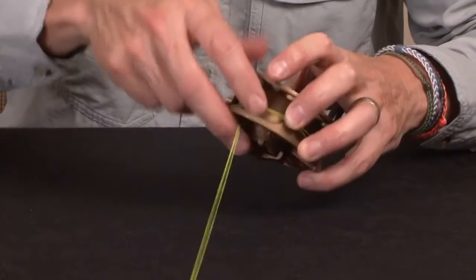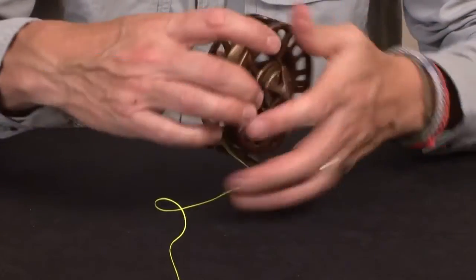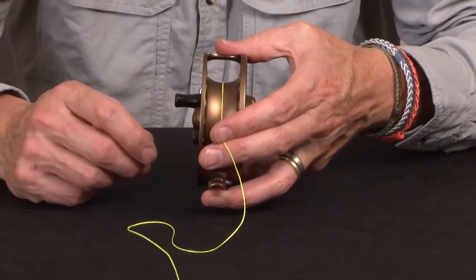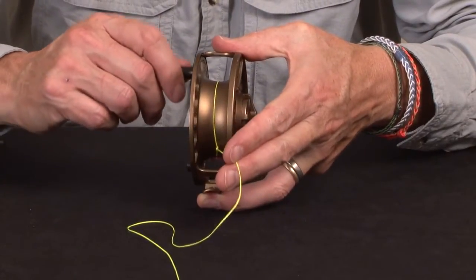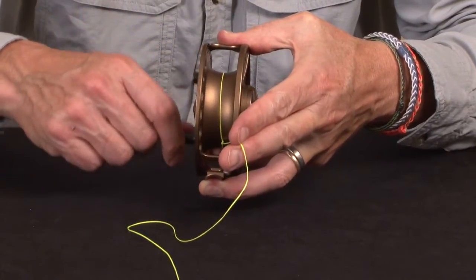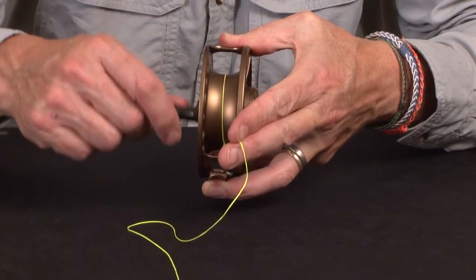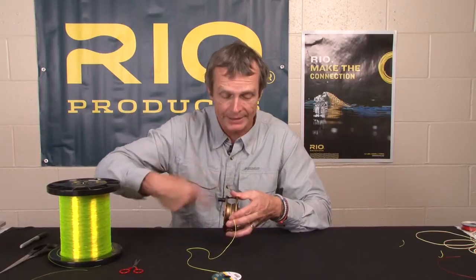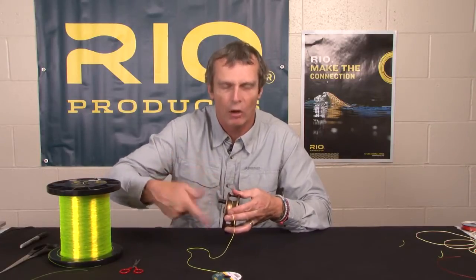If you were to set it up as a right-hand wind reel, or it's a left-hand wind reel but you do it the other way around on the backing, when you wind, you will find that it slips inside itself. When I try to wind it in, you see what's happening? The spool is slipping inside that coil of backing. It's hard to start it off.